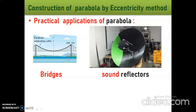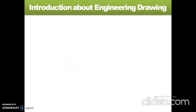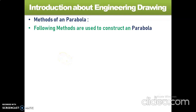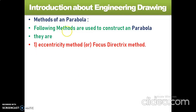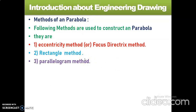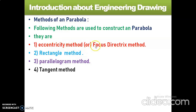Next topic: methods of parabola construction. Generally we have four methods for constructing the parabola: eccentricity method or focus directrix method, rectangle method, parallelogram method, and tangent method. According to our syllabus, we have only one method — that is the focus directrix method, or eccentricity method, or general method.